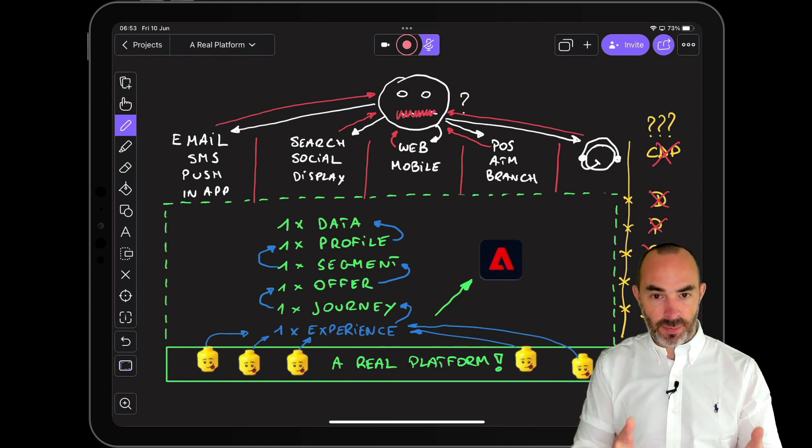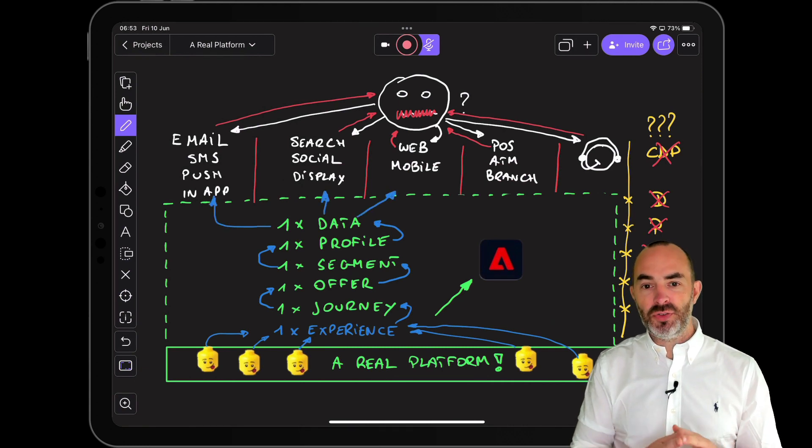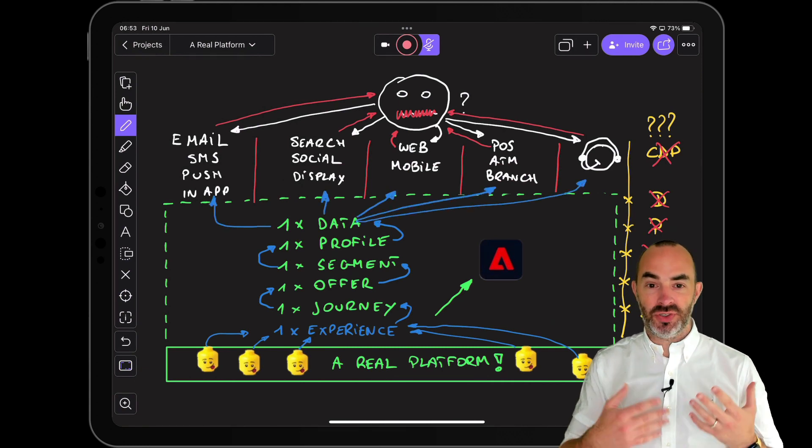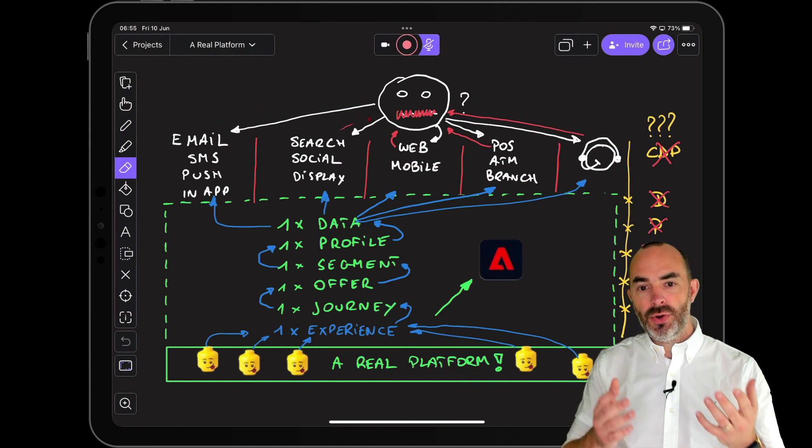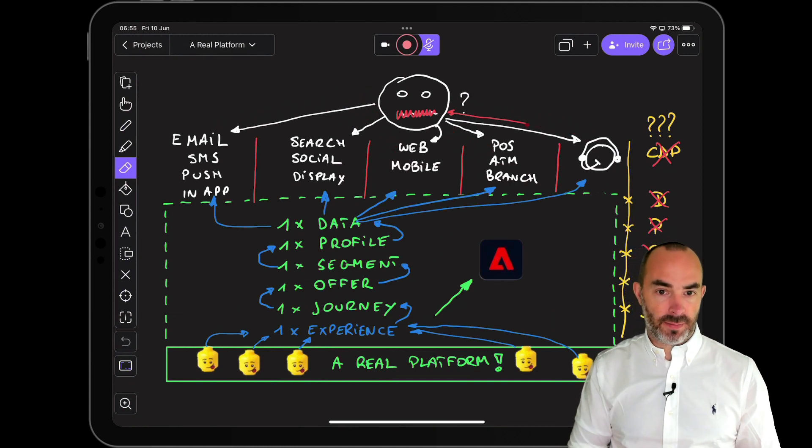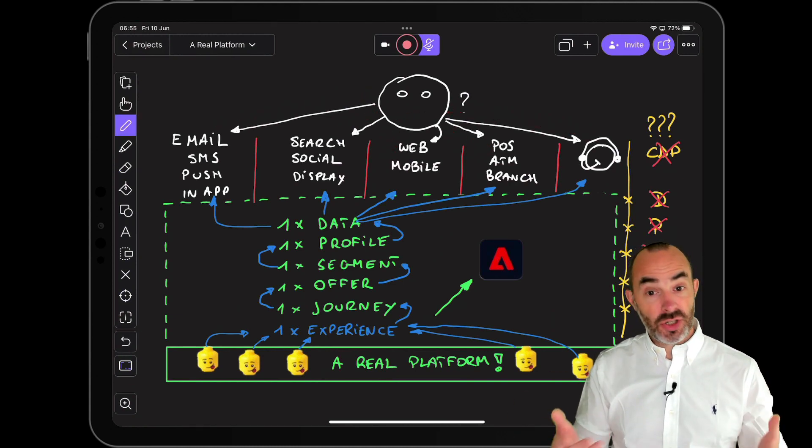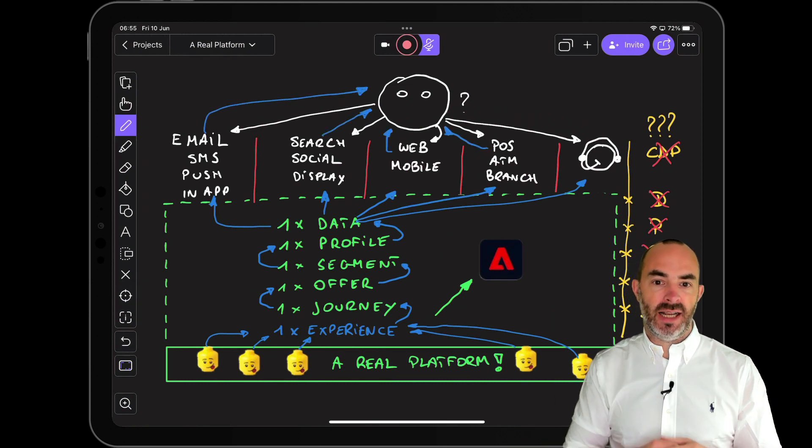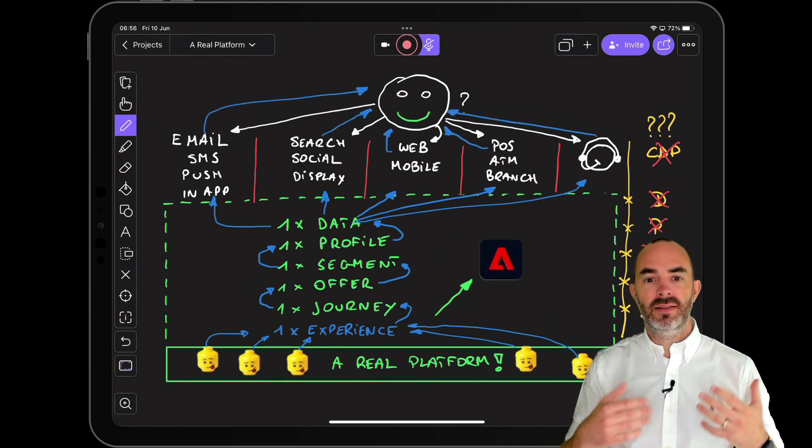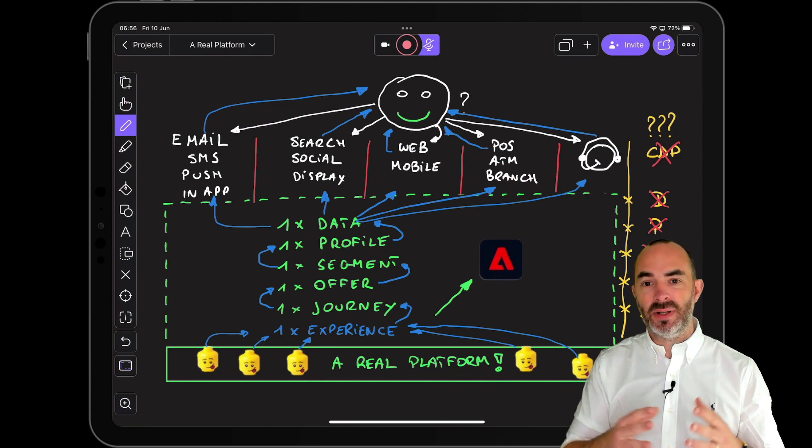And once that has happened, customer experiences will be designed for success and will lead to one-to-one experiences being delivered in a consistent, contextual, real-time, and omnichannel way, online and offline, just like it should be. And then, then you'll be able to become the most personal bank, telco, or retailer in 2022.